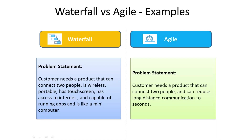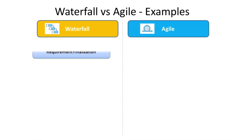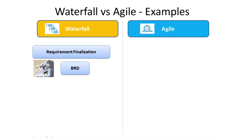In the Waterfall example, the requirements and features are clear, detailed, well-defined, and fixed in scope. As the scope and requirements are finalized and certain, a detailed BRD (Business Requirement Document) is prepared at the beginning and shared with developers to initiate design and development of the product.